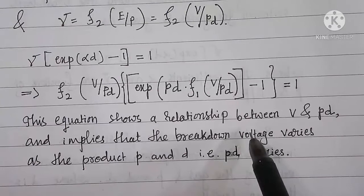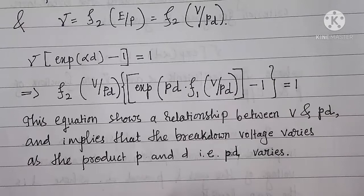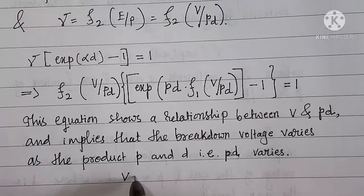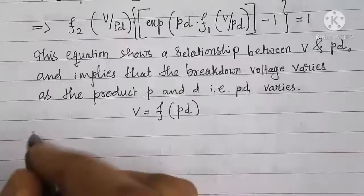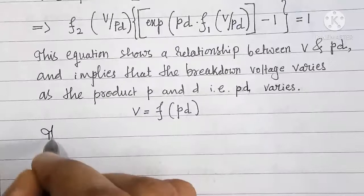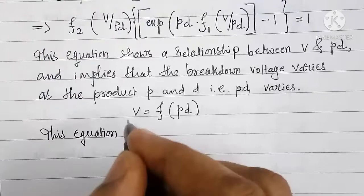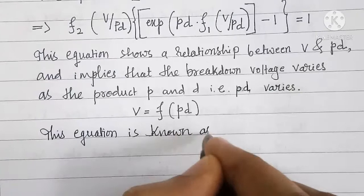Now we can write the Paschen's law in brief or in short as breakdown voltage of gas is a function of pressure P and the gap length D. This equation is known as Paschen's law.